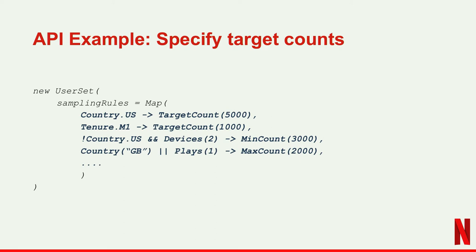Using the building blocks, you can form queries where for each building block you can specify a certain target count that you want in the result stratified set. For example, starting from the universe of all users, you can say: give me a subset where the number of US users is about 5,000, and the number of users within the first month of membership is about 1,000. These are purely hypothetical numbers — take this as synthetic data. The query takes in a map where the key is the building block and the value is a target count, and we apply these rules on our universal dataset to produce a Spark DataFrame containing all users that match that criteria.